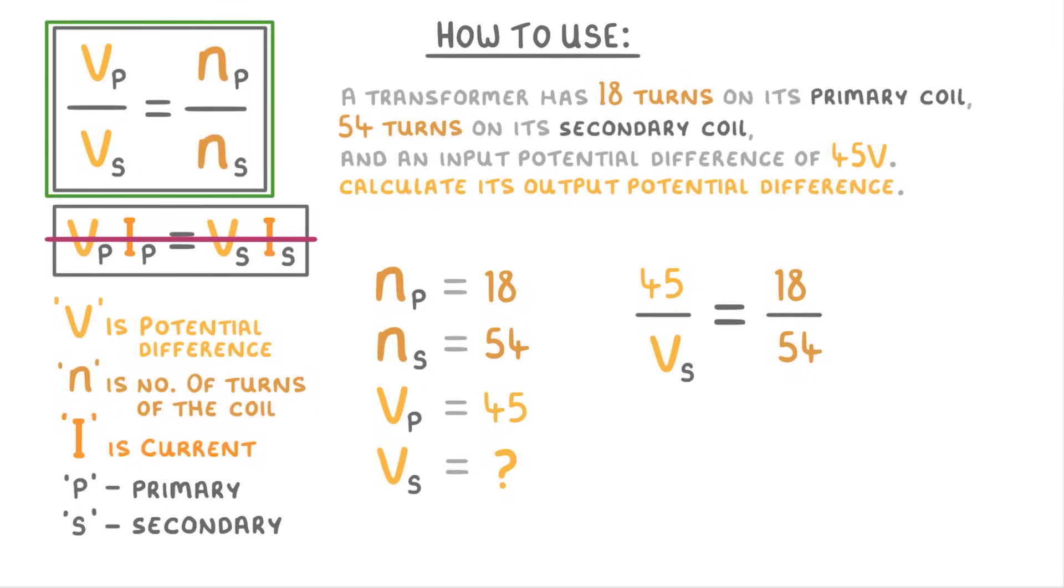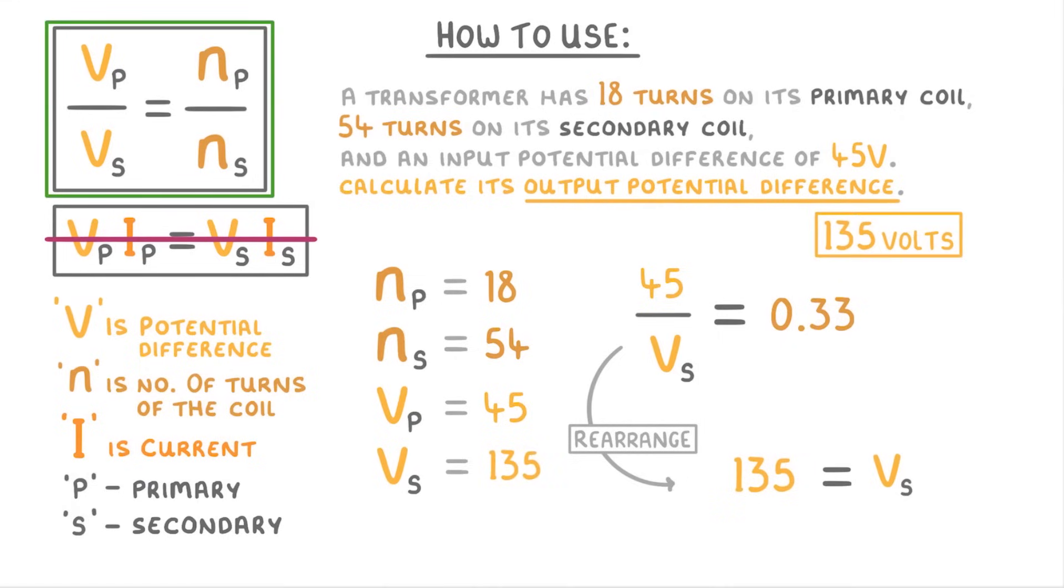Then we can rearrange it to get Vs by itself and then plug it into the calculator to find that Vs must be 135. So our output potential difference must be 135 volts.